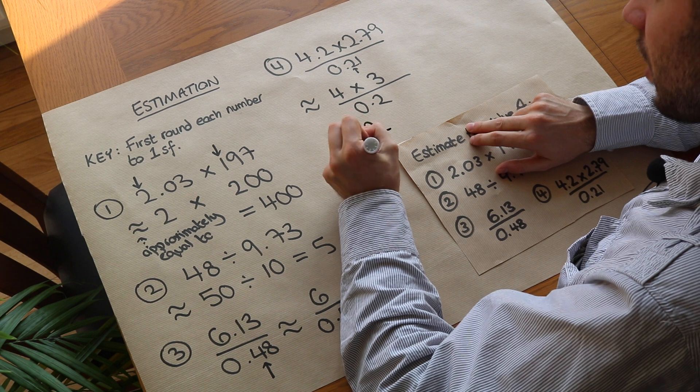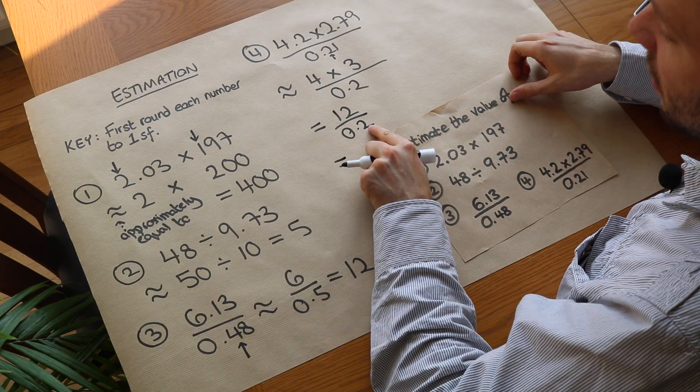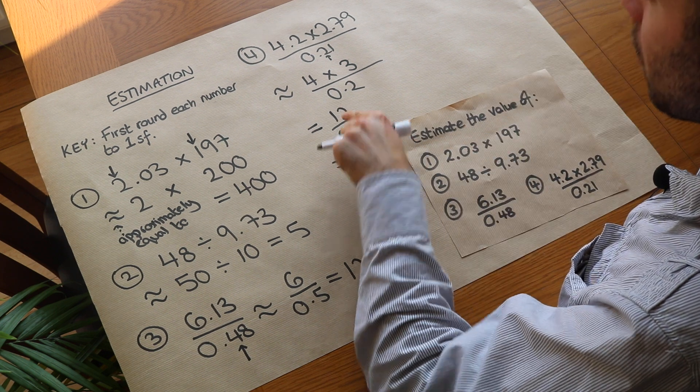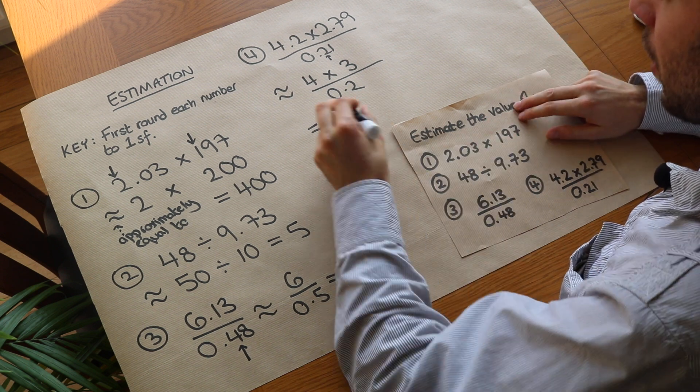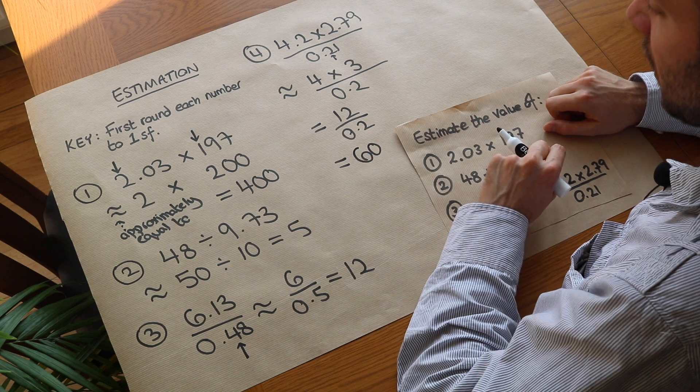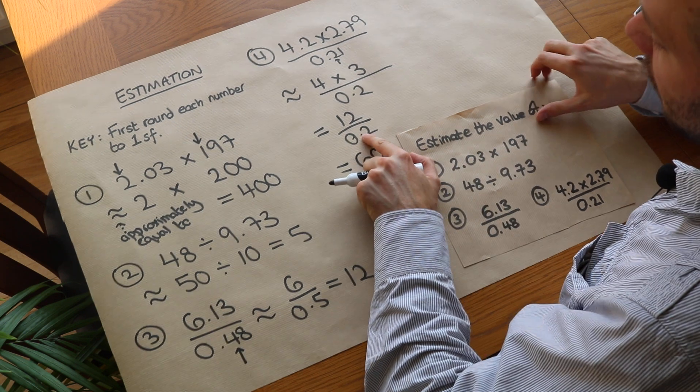But what is 0.2 as a fraction? Well it's a fifth. And when we divide by a fifth, that's the same as multiplying by 5, so it's 12 times 5 which would be 60. So be very careful when you divide by a decimal like that.